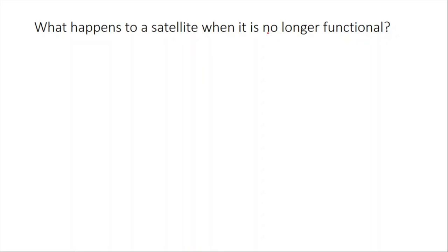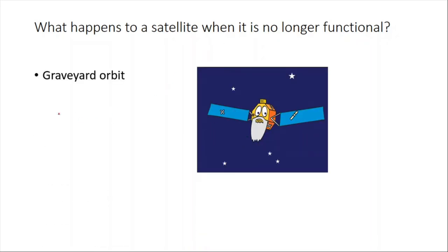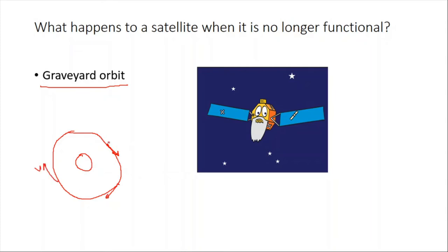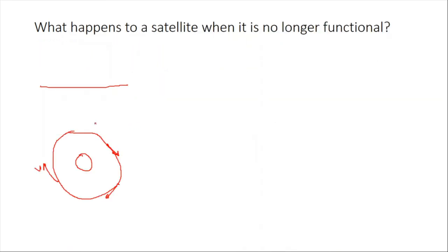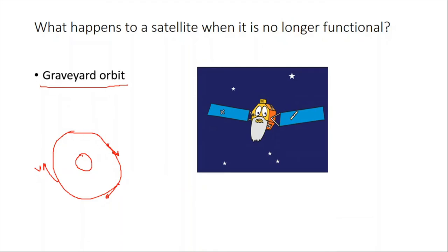When a satellite is no longer functional, it is sent to the graveyard orbit. The propulsion system is used to boost the satellite from its original orbit into a higher graveyard orbit. Once moved there, the satellite continues to rotate in this new orbit without functioning, freeing up the original orbital slot.